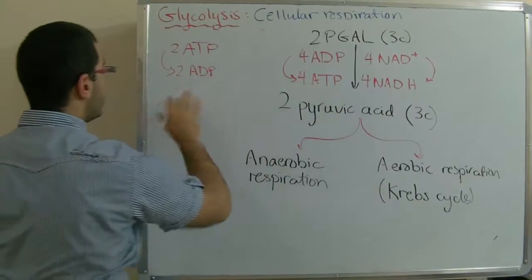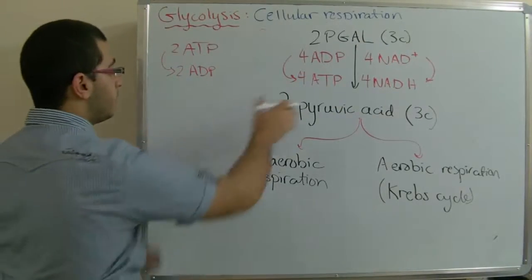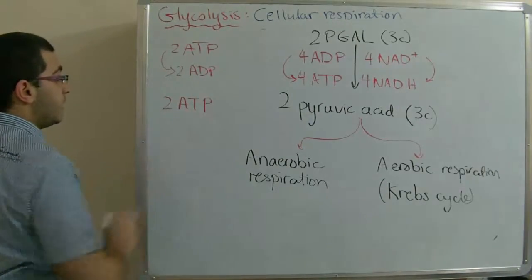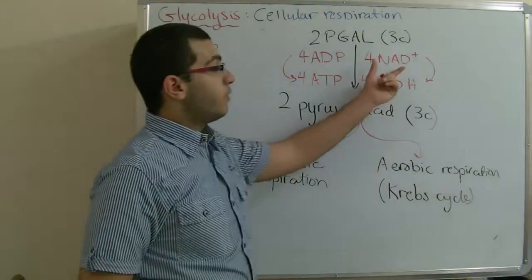So, by subtracting this from this, we gain finally that the total produced molecules of ATP is two ATP, just like we have said in the beginning, with four NADH.